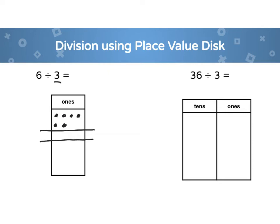I make one group, two groups, and three groups. I'm going to take one disk and put it in each group, then do that three times. Now I've divided them into three even groups — how many are in each group? Two. So I know that my quotient is two. Six divided by three is two. It's like you have three people to divide candy between and you want to make sure everybody gets the same amount, or it would not be fair.